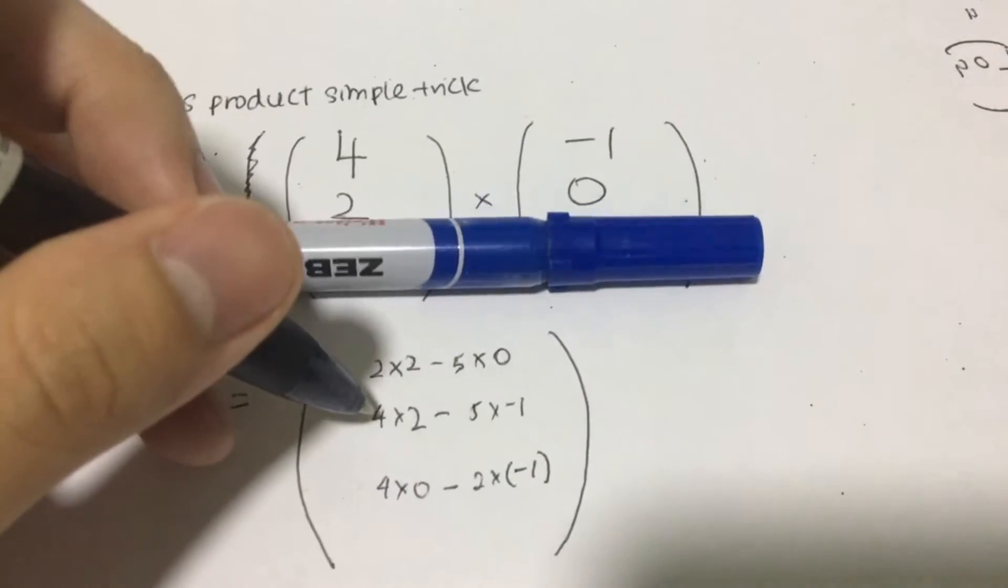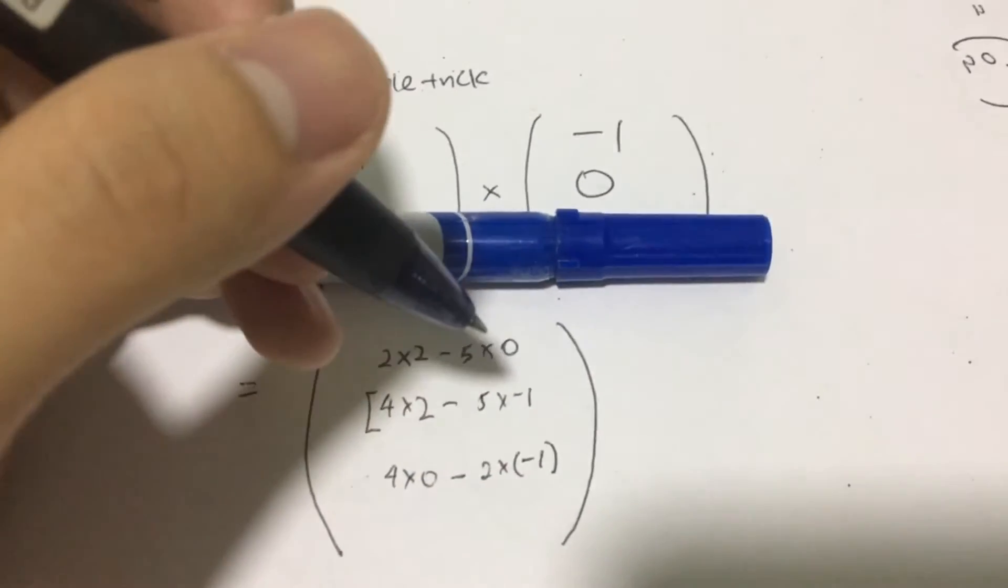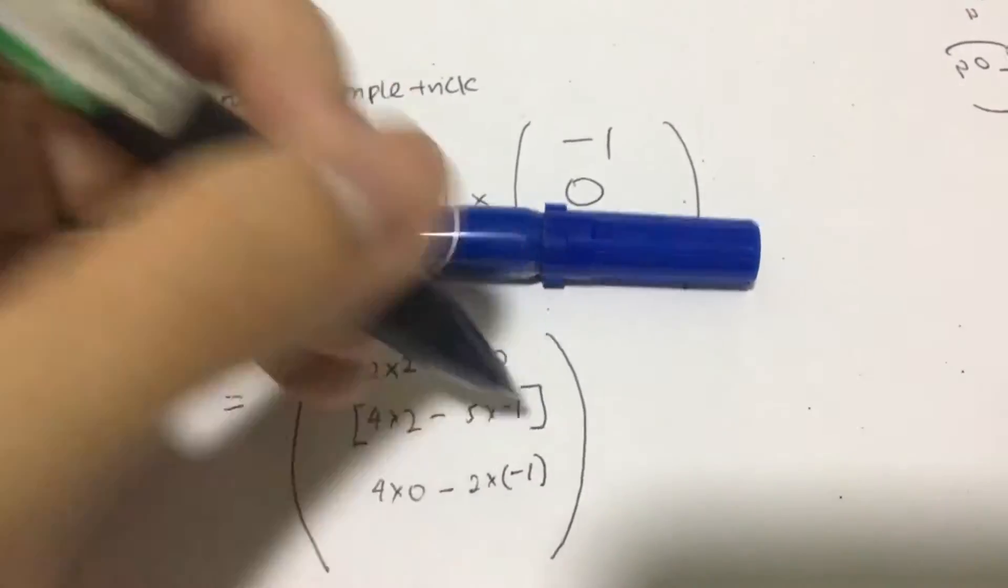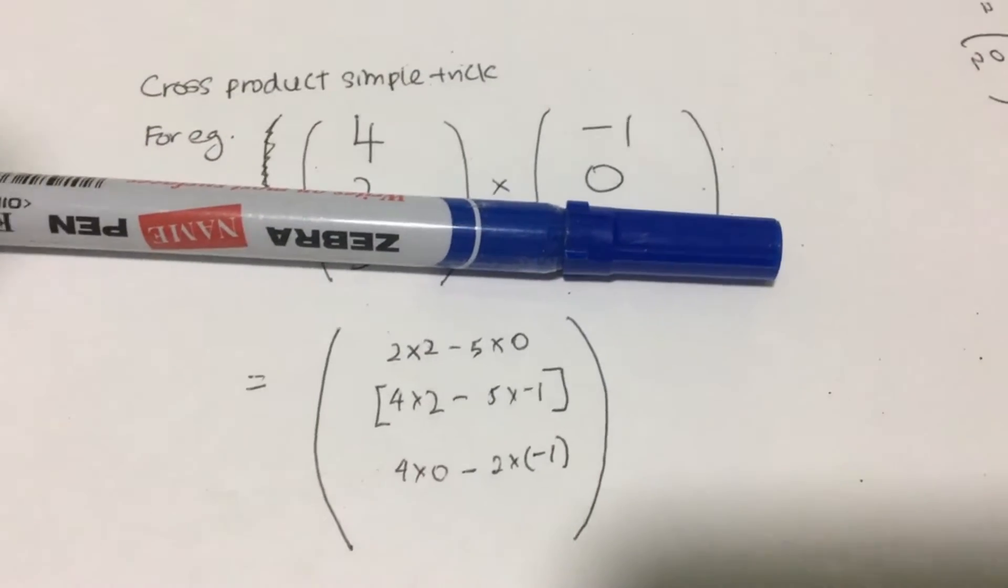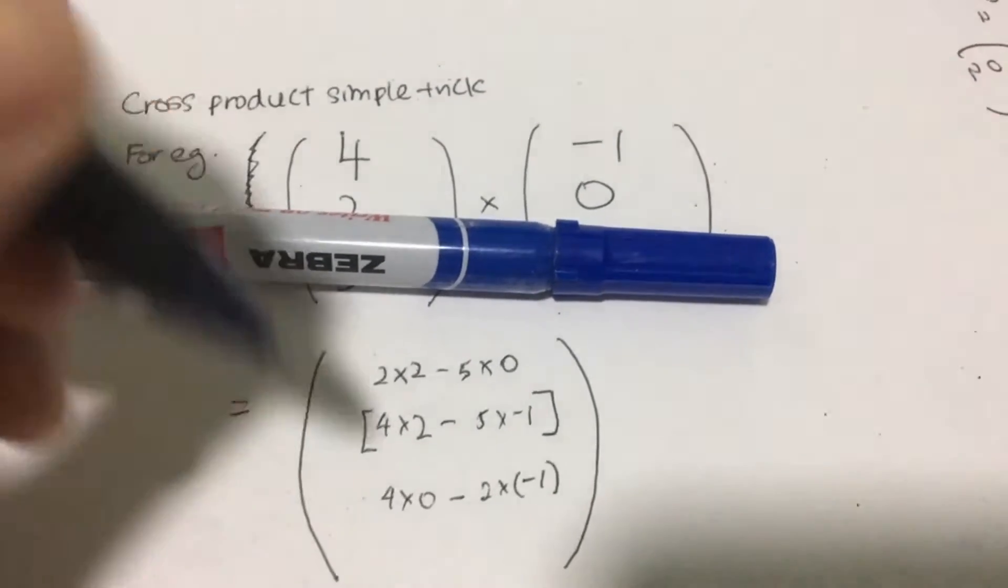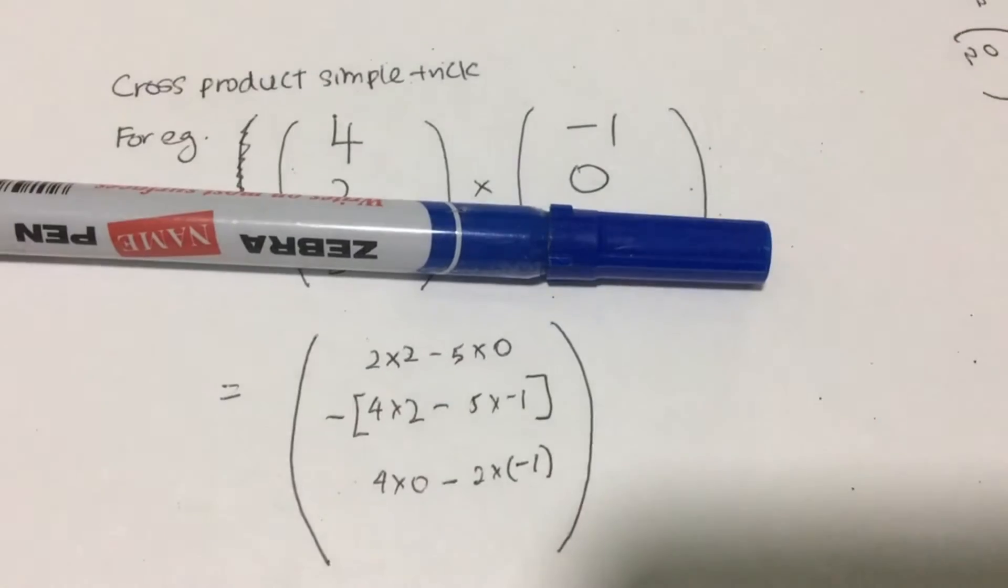And of course, last but not least, for the second row of your answer, you have to do a bracket and after that, put a negative sign in front.